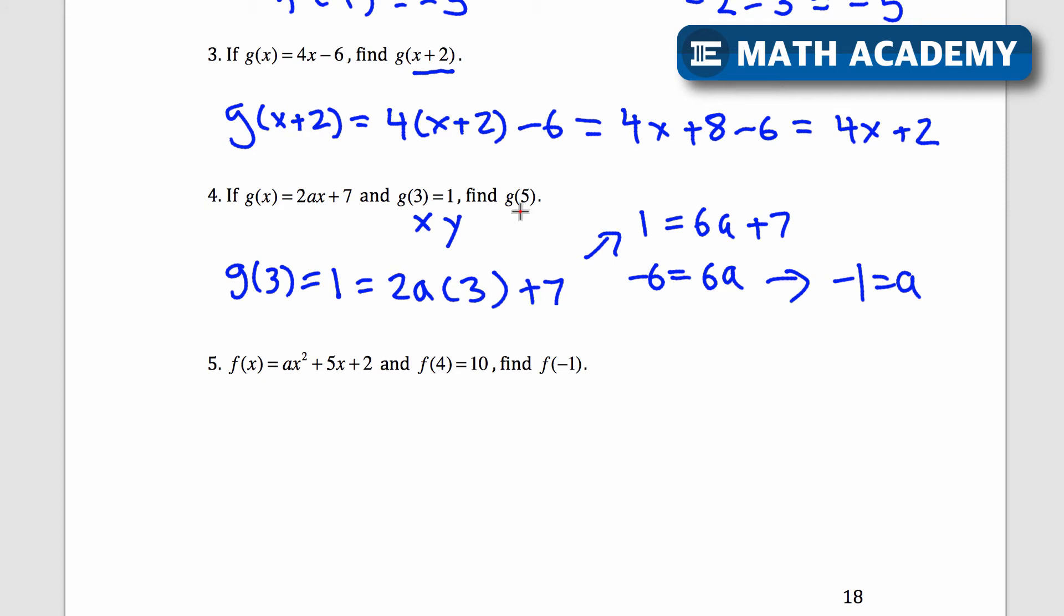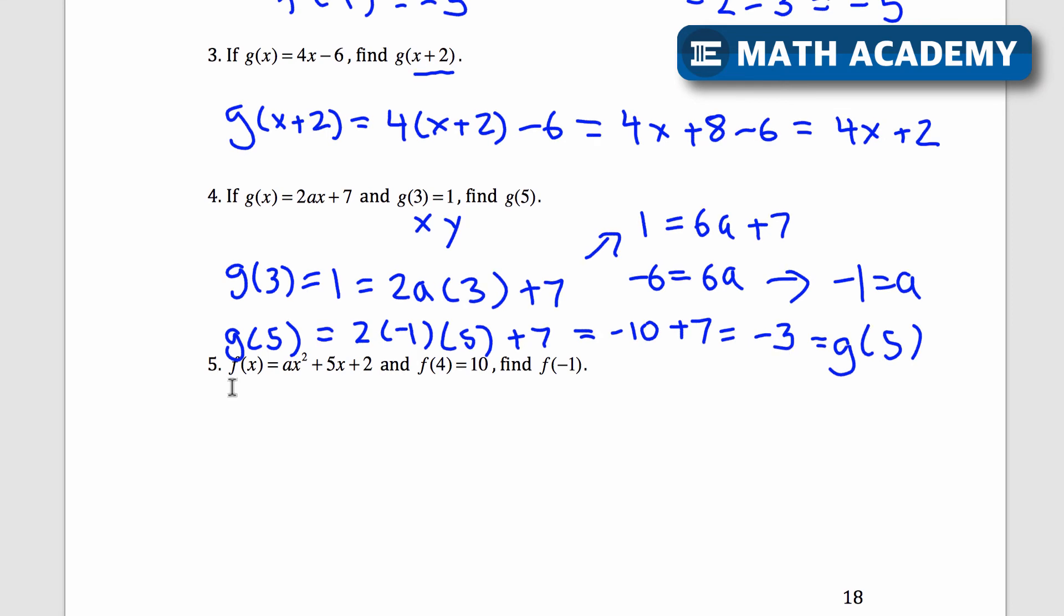So now that I know a, I can find g of 5. So g of 5 is going to be equal to 2 times a is negative 1, negative 1 times 5 is my x. x is going to be 5 right here, times 5 plus 7. If I evaluate this, I get 2 times negative 1 times 5. That's negative 10 plus 7. Negative 10 plus 7 is going to be negative 3. So that's what g of 5 would be.